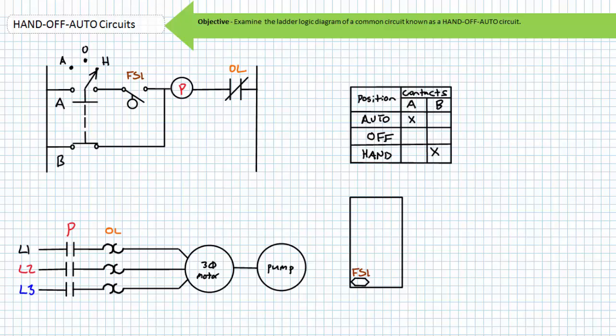This could be used to function test the system or bypass a malfunctioning float switch that, despite being submersed in liquid, just refuses to close. Switches like human employees have off days too.